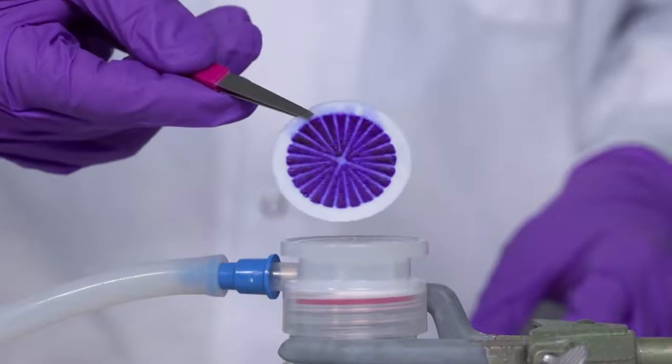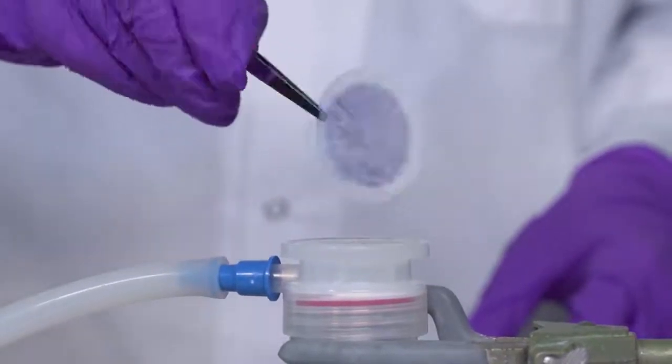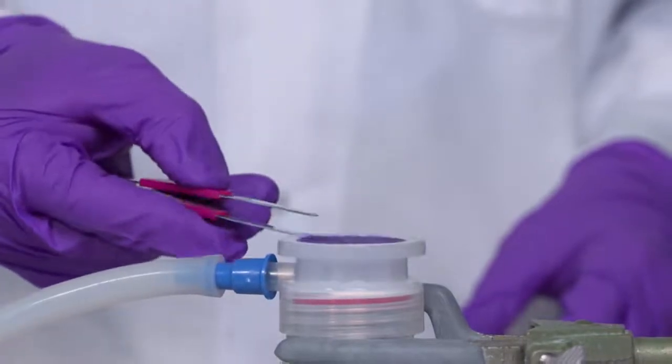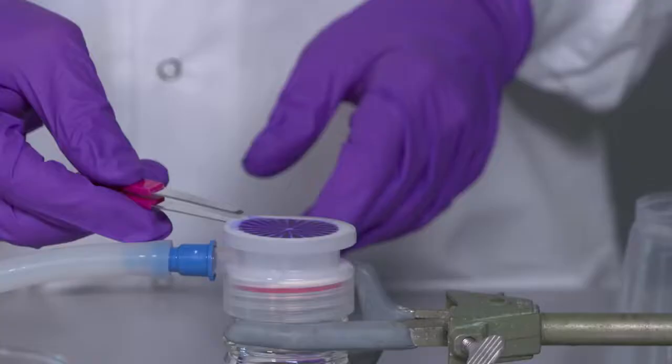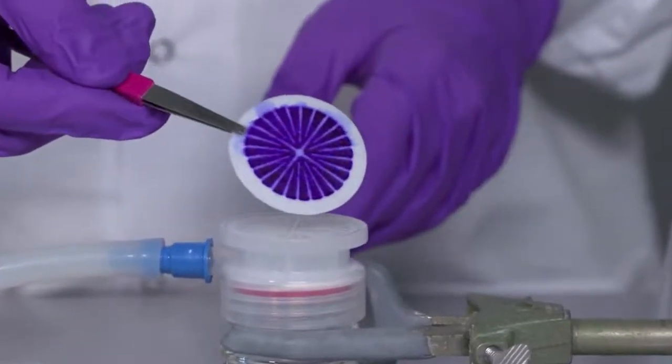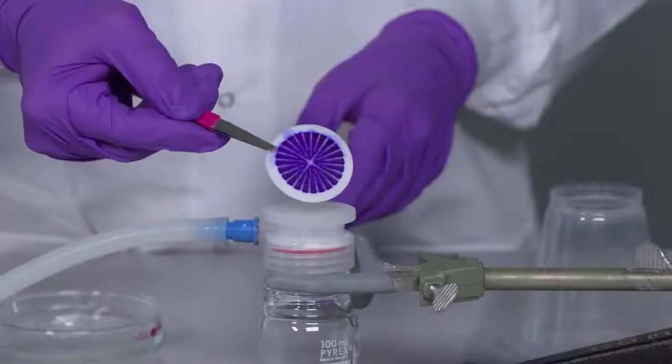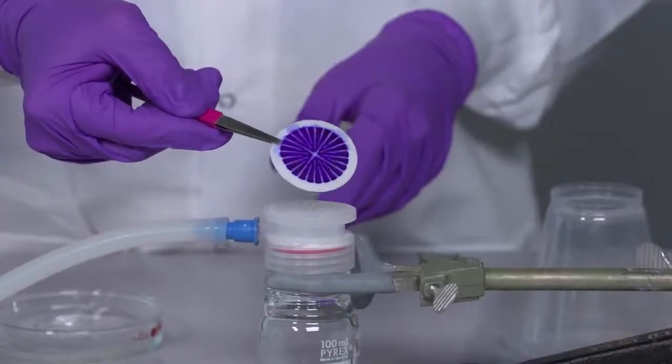After filtration is complete, you can remove the Natrix Q membrane from the Millicupflex and analyze either the filtrate or the retentate depending on your application. In the example of this dye solution, you can see that the Natrix Q membrane's affinity for this negatively charged particulate makes it useful in molecular purification.